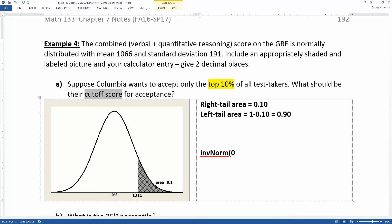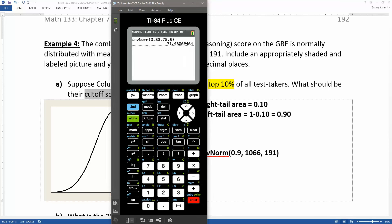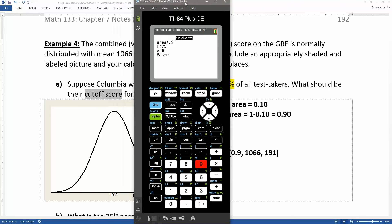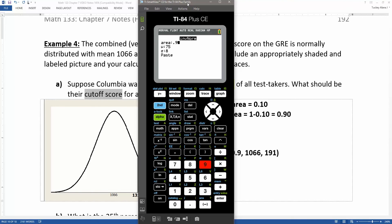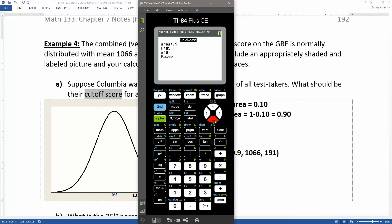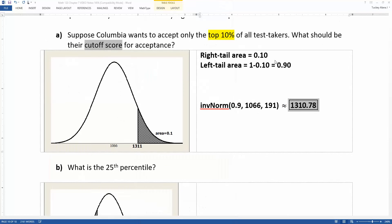So 0.9, the mean is 1066, the standard deviation is 191. Let me go pull up the calculator. Second distribution, number three, the area is 0.9, because that's that white area right there that's left exposed by the calculator. That's 0.9. The mean is 1066, standard deviation 191. I'm going to go paste this in and press enter. And sure enough, I get 1311 if I round it. And there we have it.